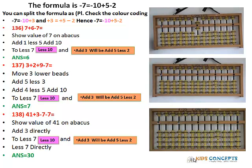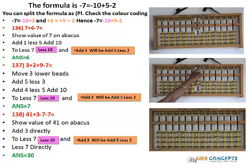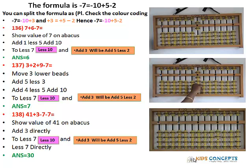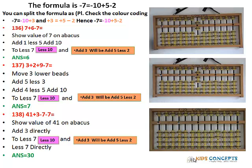Now the next problem for 7: 3 plus 2 plus 9 minus 7. So start with 3, add 2 using add 5 less 3. Then add 9 — remember you don't have lower beads to deduct, so take the combination add 4 less 5 add 10. Now less 7: less 7 is less 10 add 5 less 2. The answer is 7.